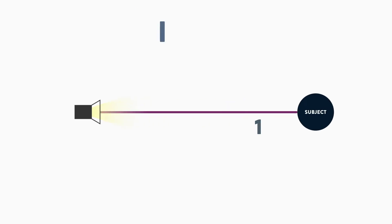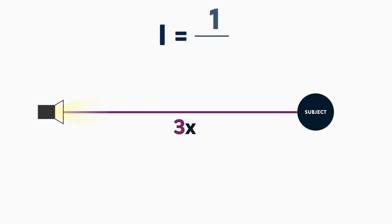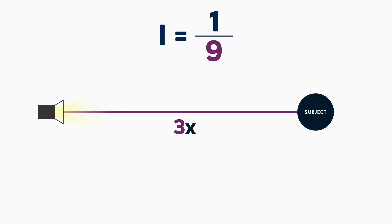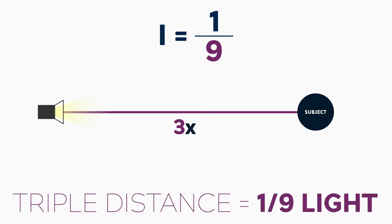Let's look at another example. If we want to triple the distance of our light source, then d becomes 3, so our equation is 1 over 3 squared, which is 1 ninth. So we have one ninth the amount of light.